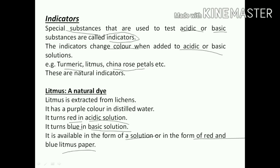So these are the indicators. Litmus is one type of indicator which helps to identify which substance is acidic and which is basic. Next, you see this is lichen, and from this lichen we get the litmus paper. And this is the litmus paper - one is red in color and one is blue in color.